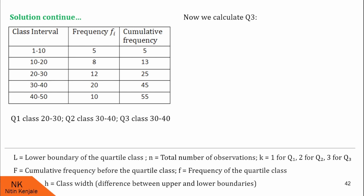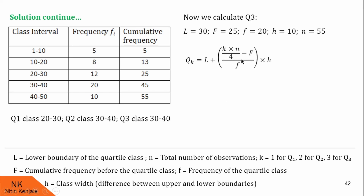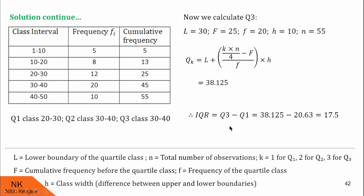For Q3, the formula is L + [(3·(n/4) − F) / f] × h. The Q3 class is also 30–40, so L = 30, F = 25, f = 20, and h = 10. The only value that differs from Q2 is k = 3. After substituting all values and simplifying, Q3 = 38.125. Now IQR = Q3 − Q1 = 38.125 − 20.63 = 17.5.